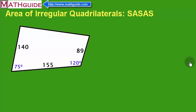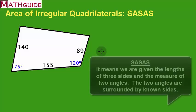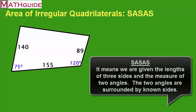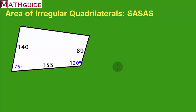This is MathGuide.com. My name is Mark Karadimos. Today we're going to take a look at how to calculate the area of an irregular quadrilateral. We're going to take a look at this figure and I labeled it side-angle-side-angle-side because I have three sides and a couple of angles, and these angles are between pairs of sides — not on the ends away from the sides, but between sides.